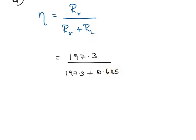After simplification, we get the radiation efficiency eta equals 0.997. Hope you find this video useful. Thank you.